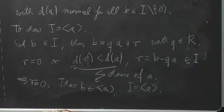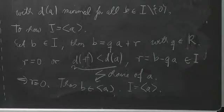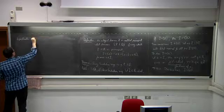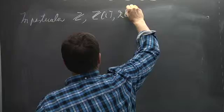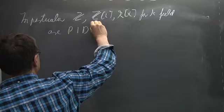In particular, we find that the Euclidean rings we have introduced — Z, Z[i], and k[x] for k a field — are all principal ideal domains.